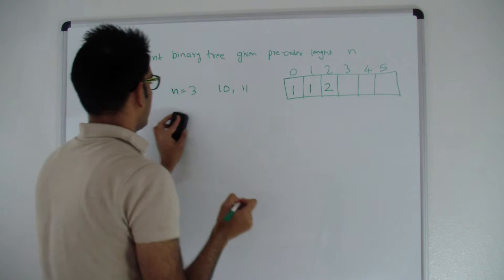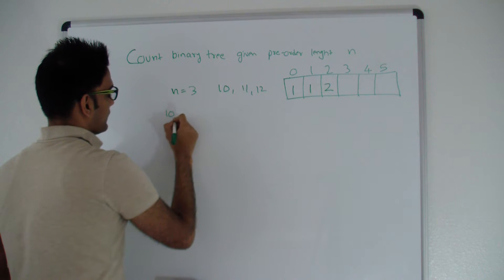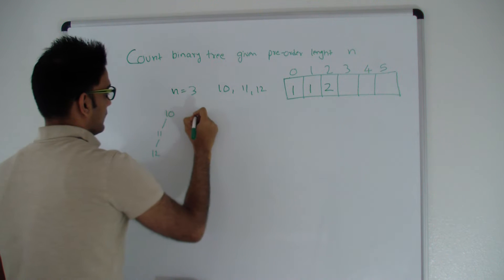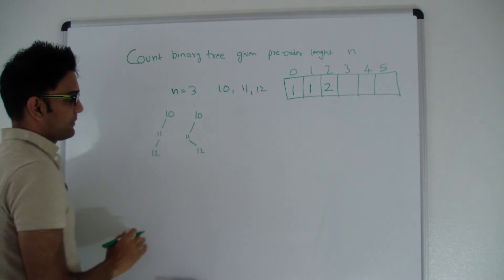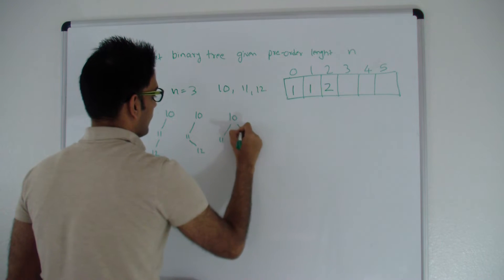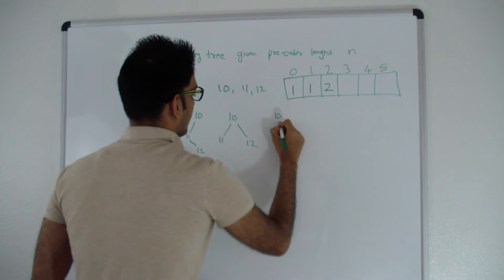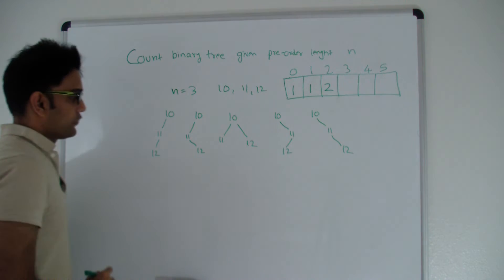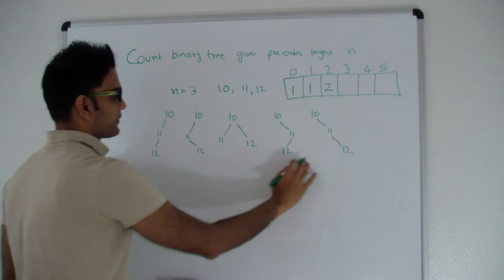Now let's talk about when n is 3 and the keys are 10, 11, and 12. When 10 is the root we can arrange 11 and 12 in different ways. In total we can get 5 different binary trees which have the same pre-order sequence 10, 11, 12. So when n is 3 the total number of trees is 5.